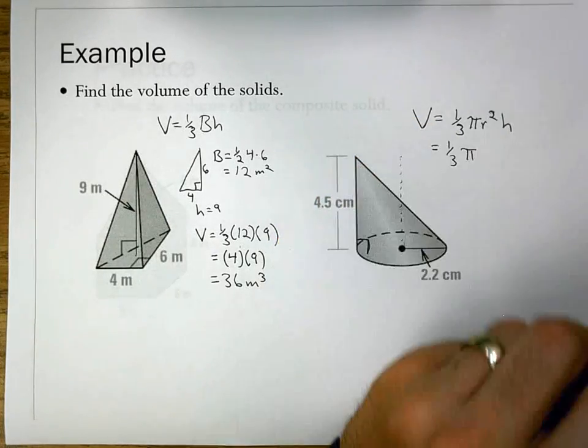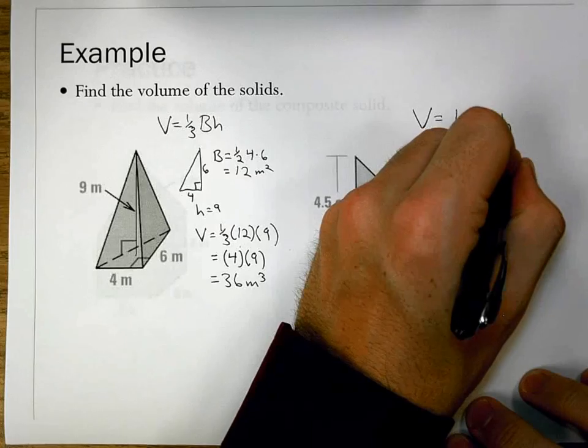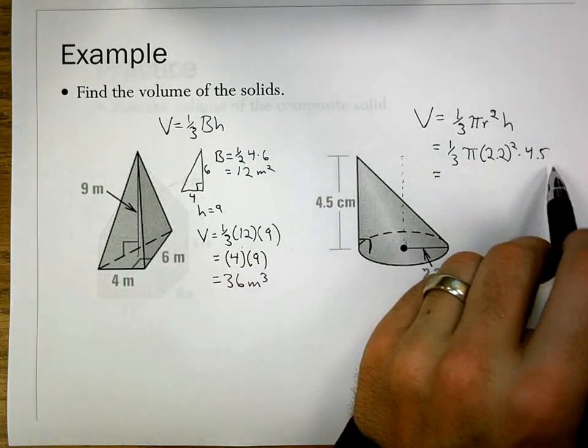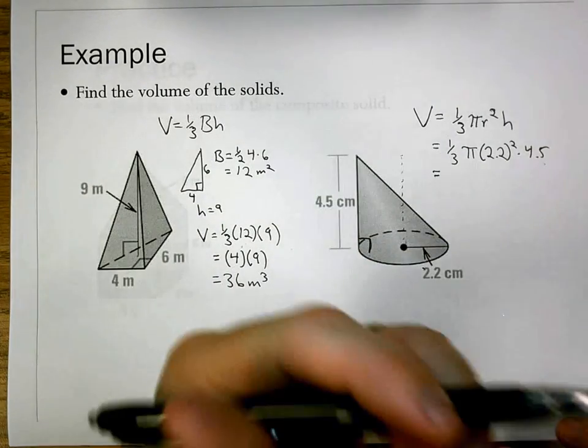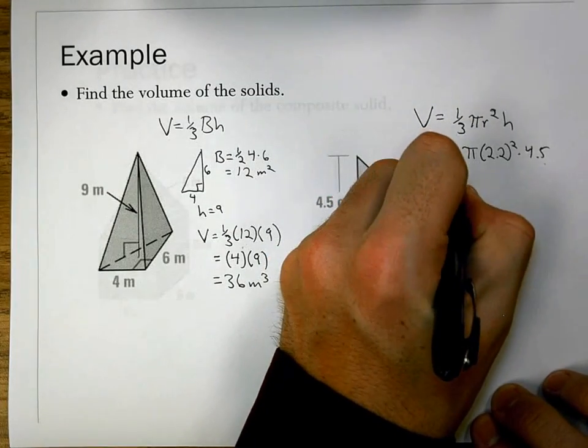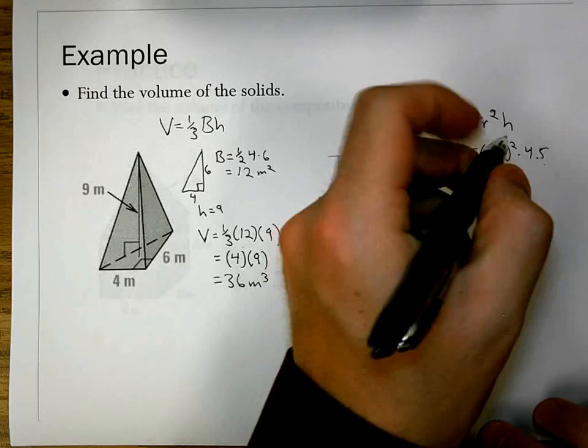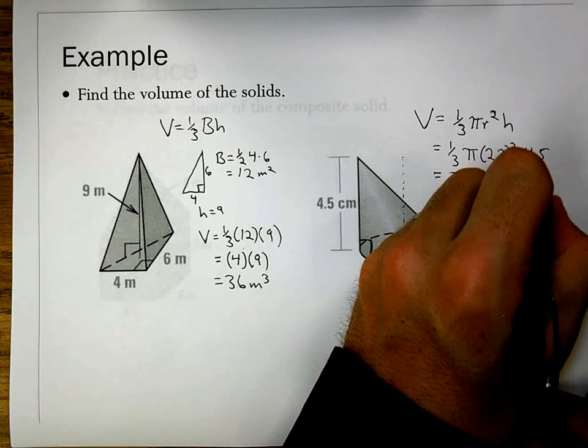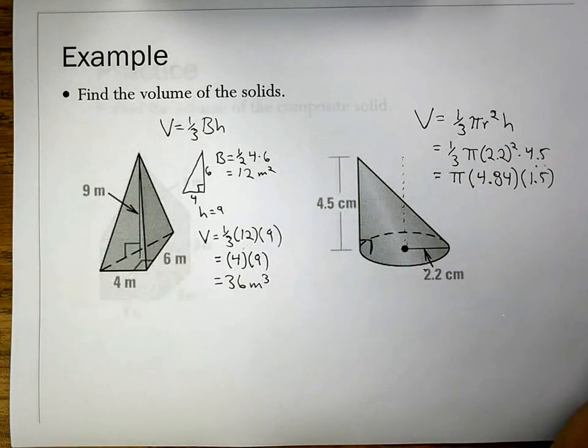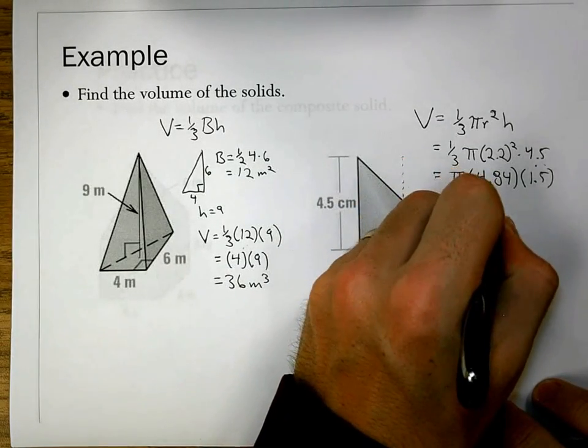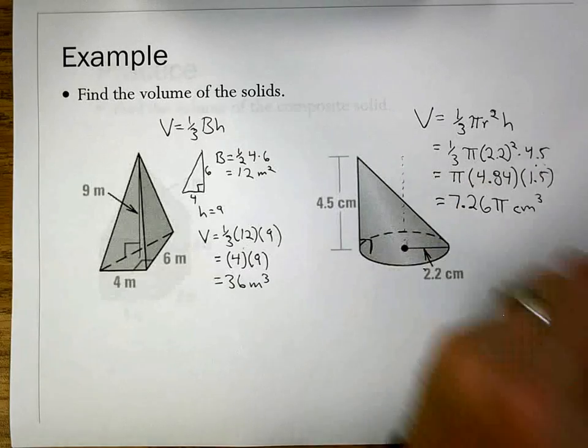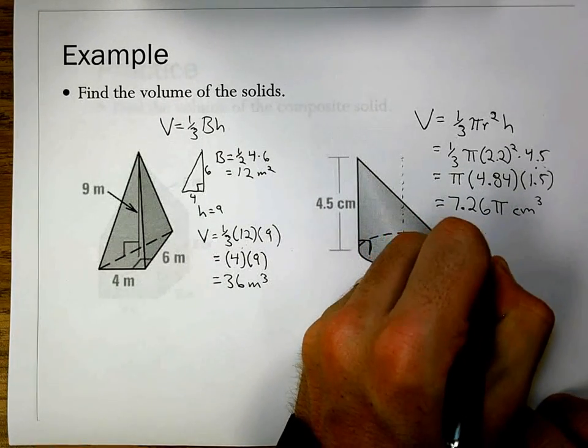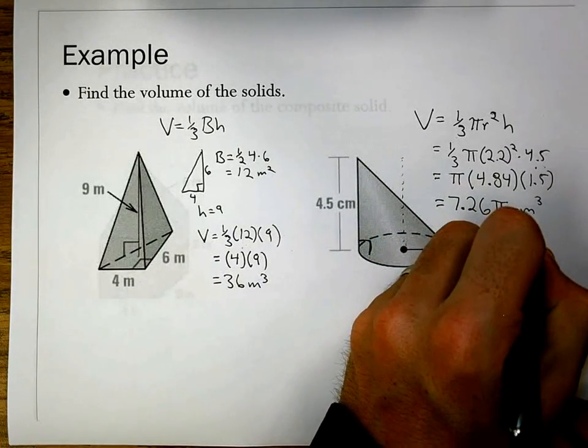We get one-third π times 2.2² times 4.5. If I actually took 4.5 and divided by 3, it makes it 1.5. Let's get 2.2 squared, so 4.84, and then I'm dividing 4.5 by one-third, so that's 1.5. I have 4.84 times 1.5 gives me 7.26π centimeters cubed. We could leave it in terms of π, or we could multiply that by π, and we get it's approximately 22.8 centimeters cubed.